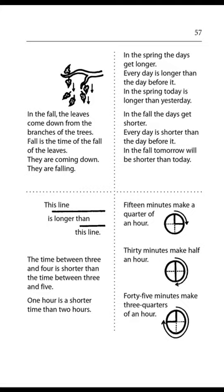In the spring, the days get longer. Every day is longer than the day before it. In the spring, today is longer than yesterday. In the fall, the days get shorter. Every day is shorter than the day before it. In the fall, tomorrow will be shorter than today. One hour is a shorter time than 2 hours. Fifteen minutes make a quarter of an hour. Thirty minutes make half an hour. Forty-five minutes make three quarters of an hour.